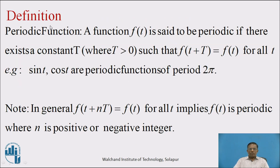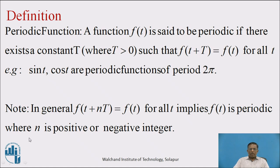Let us start with the definition of periodic function. A function f(t) is said to be periodic if there exists a constant T, where T greater than 0, such that f(t + T) = f(t) for all t. For example, sin(t) and cos(t) are periodic functions of period 2π. Note that in general, f(t + nT) = f(t) for all t implies that f(t) is periodic, where n is either a positive or negative integer.